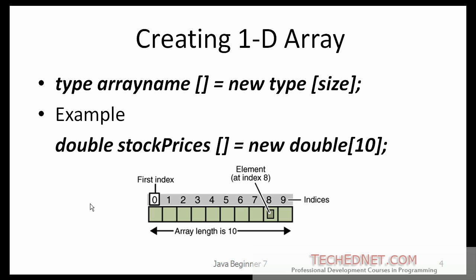Once the array is created, its length is fixed and cannot be changed. Each item in an array is called an element — here is the first element, the second element, etc. Each element is accessed by its numerical index. As shown in this illustration, numbering begins at 0, so the first element has an index of 0. The ninth element, for example, would therefore be accessed at index 8.